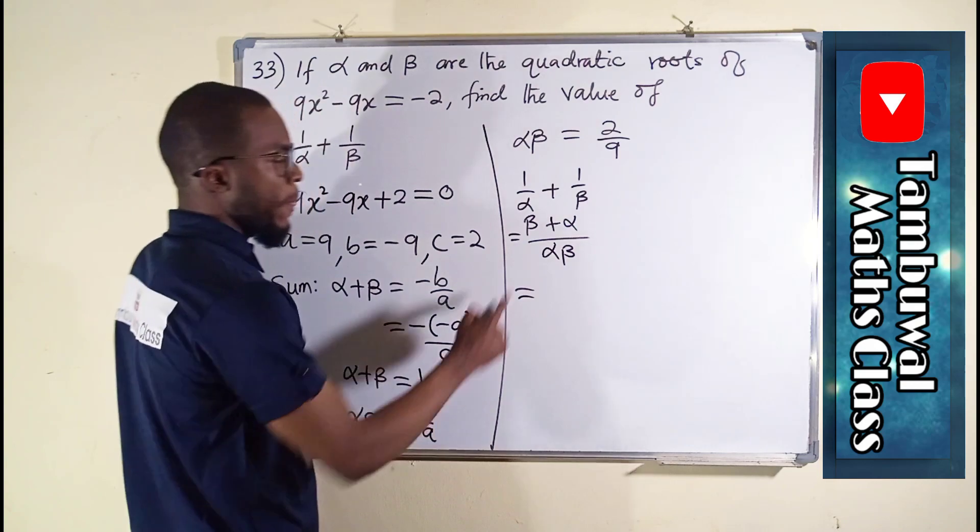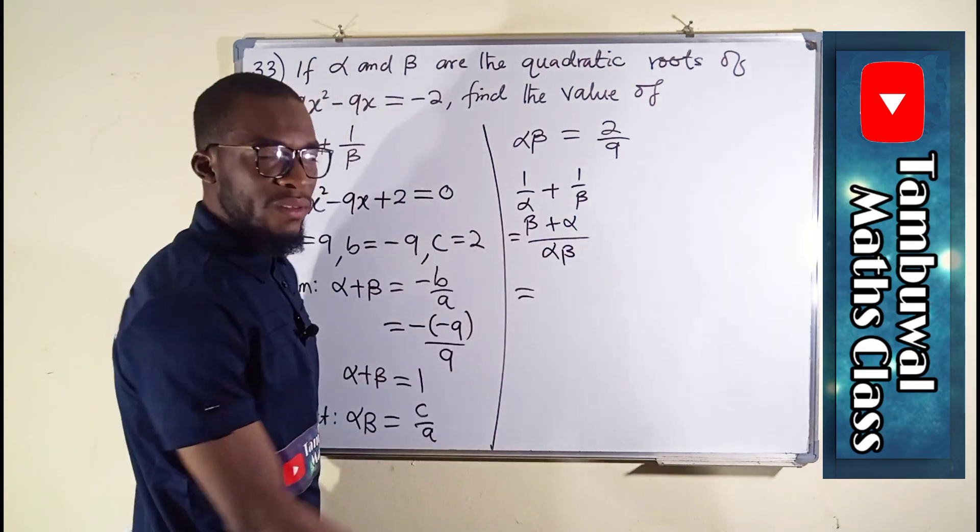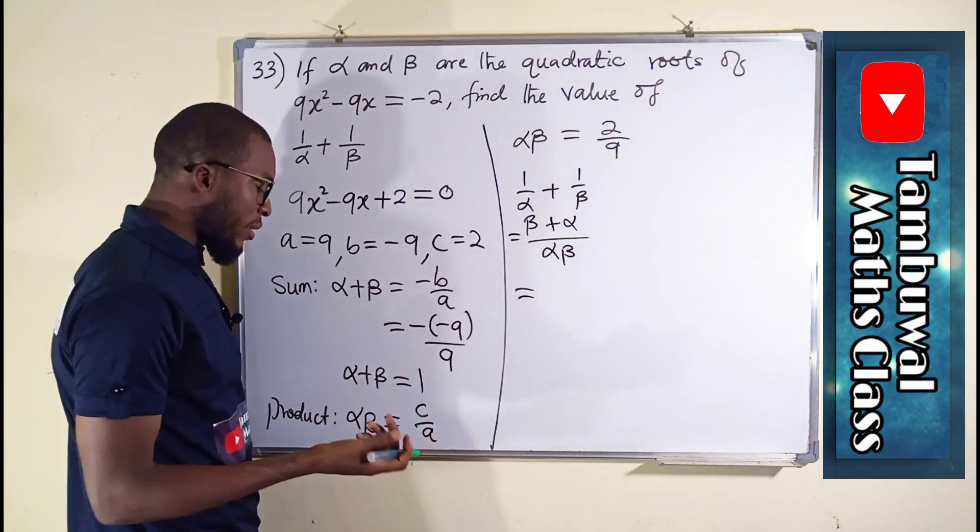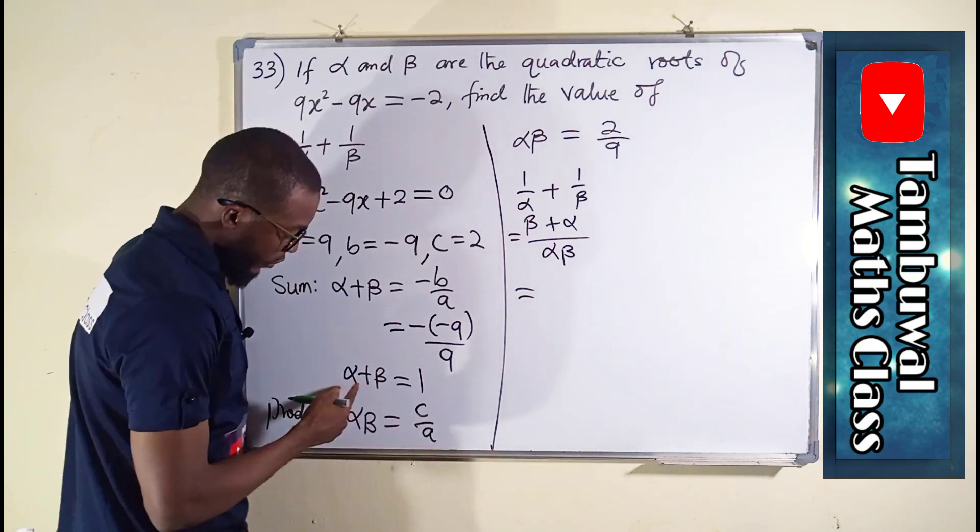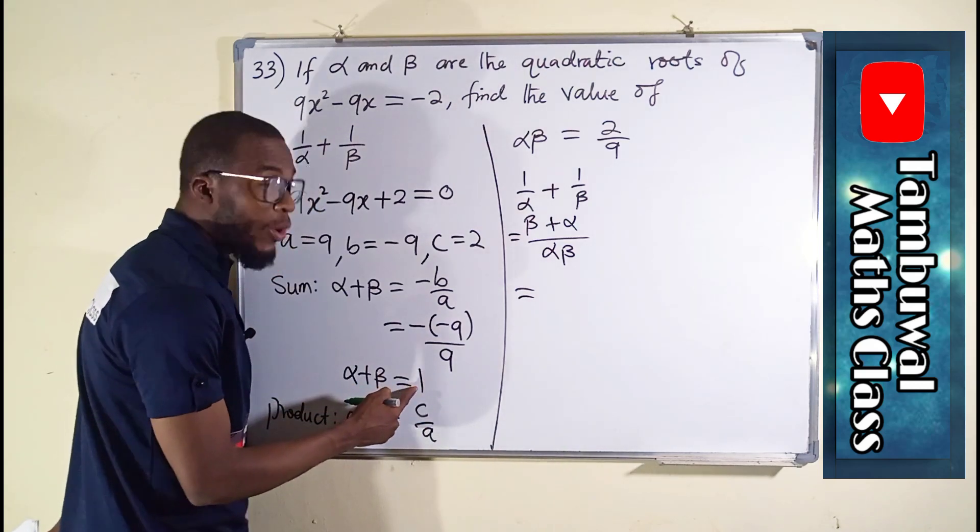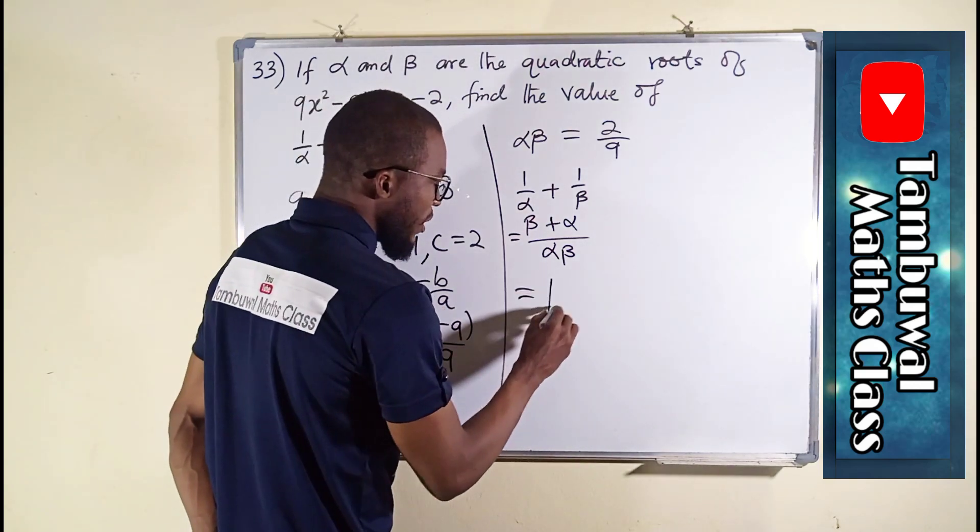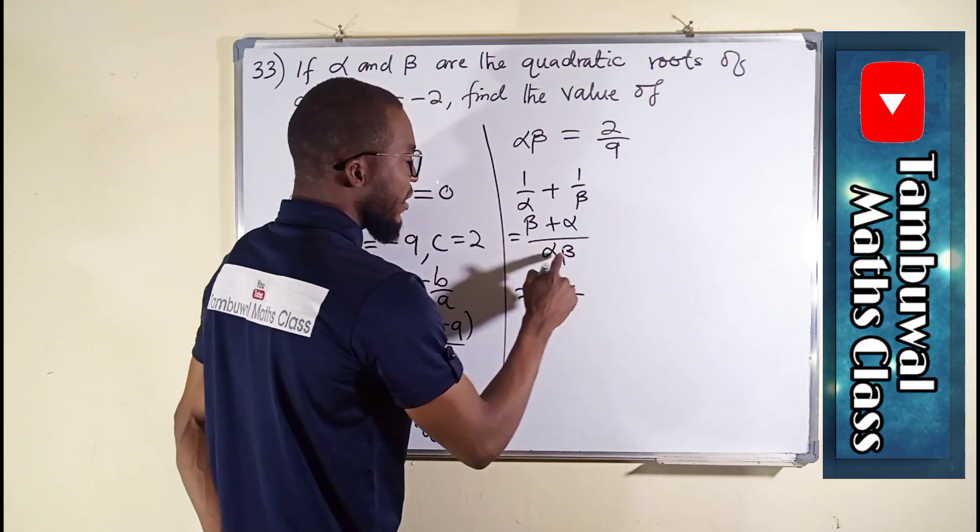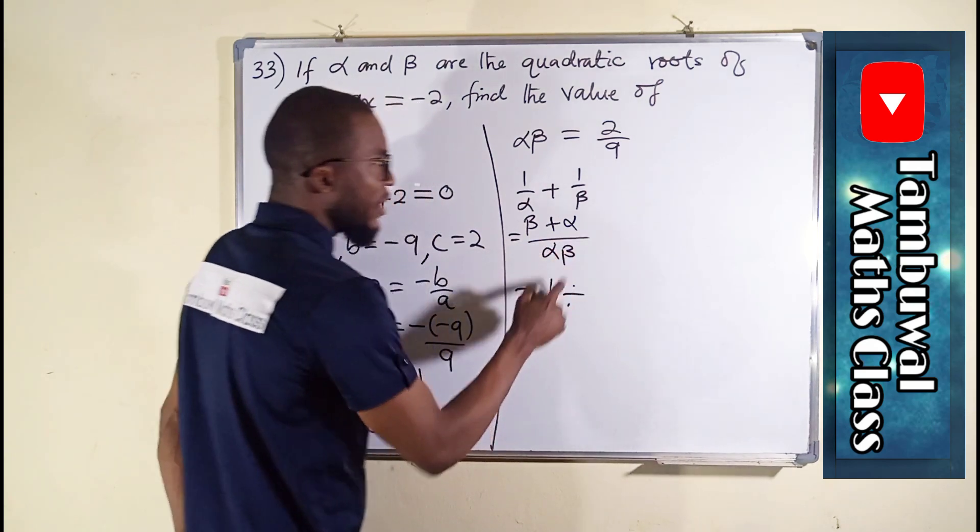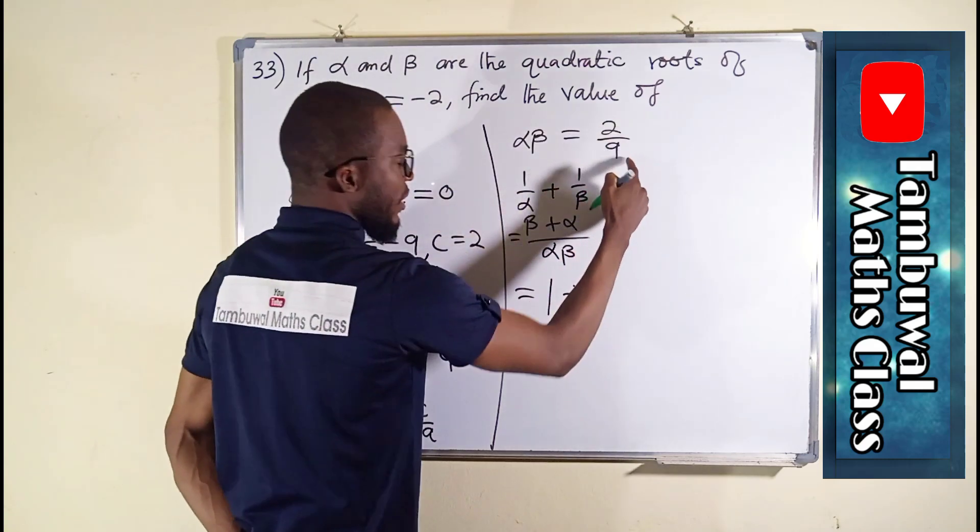This is equal to beta plus alpha, which is the same thing as saying alpha plus beta. They are commutative. We have alpha plus beta to be equal to 1 here, so we have 1 here divided by alpha times beta. We have it here as 2 over 9.